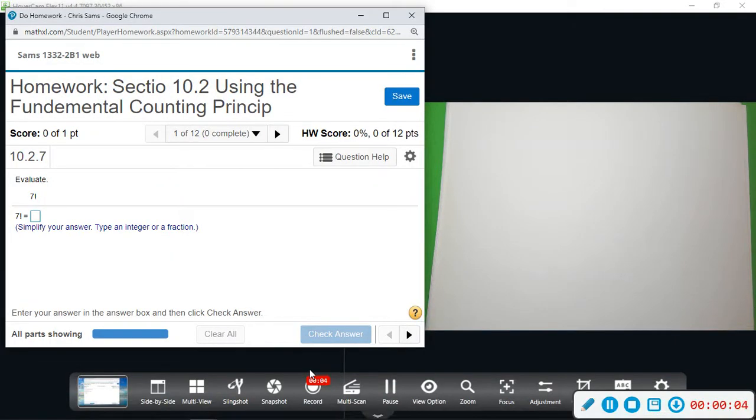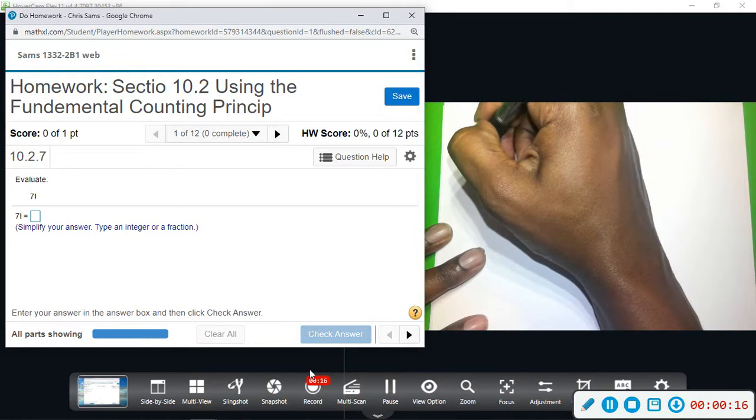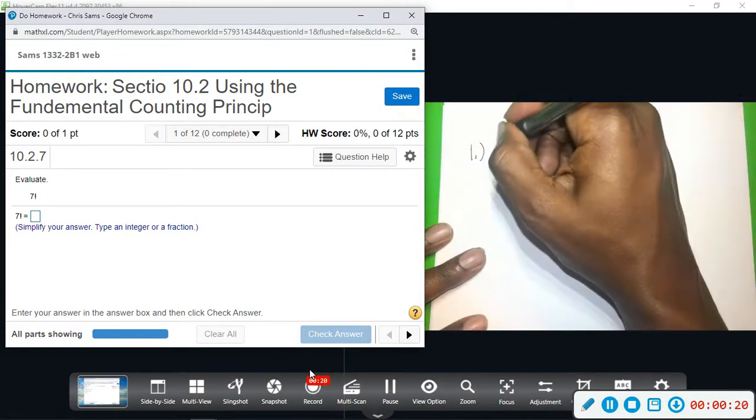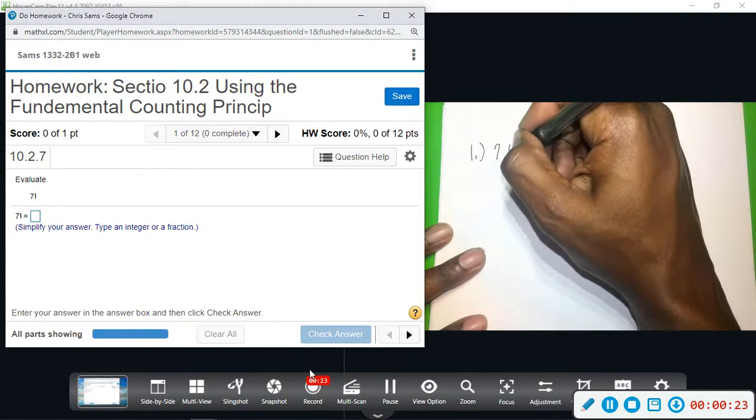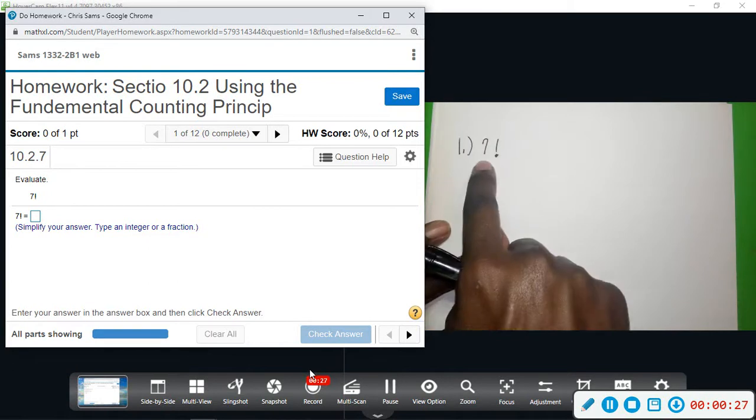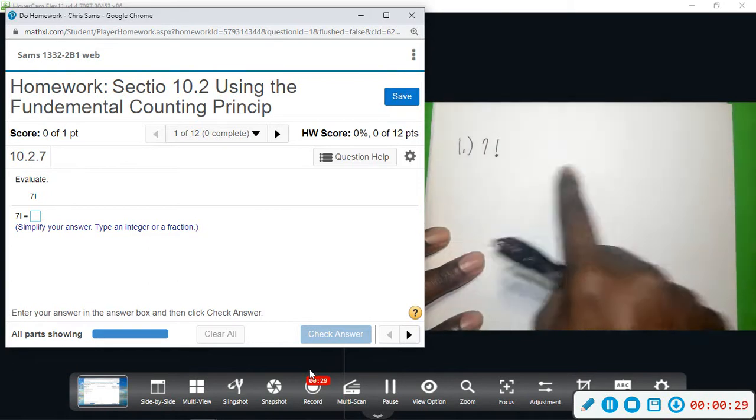We're going to be looking at section 10.2, the Fundamental Counting Principle. This first problem is 7 factorial, which looks like 7 exclamation point. This exclamation point is called factorial in math, and it simply means you're going to multiply this number and every number preceding it.